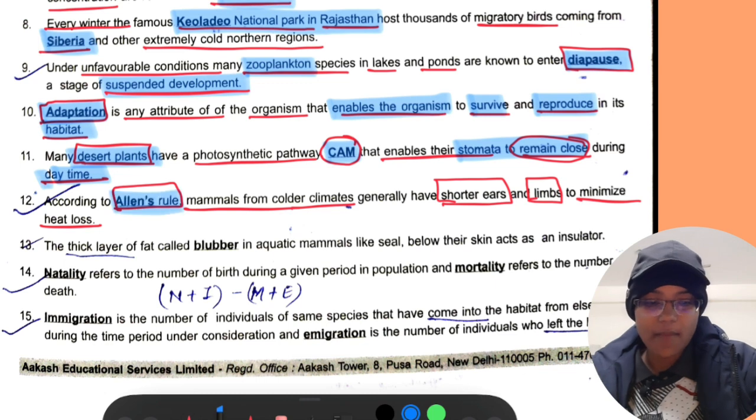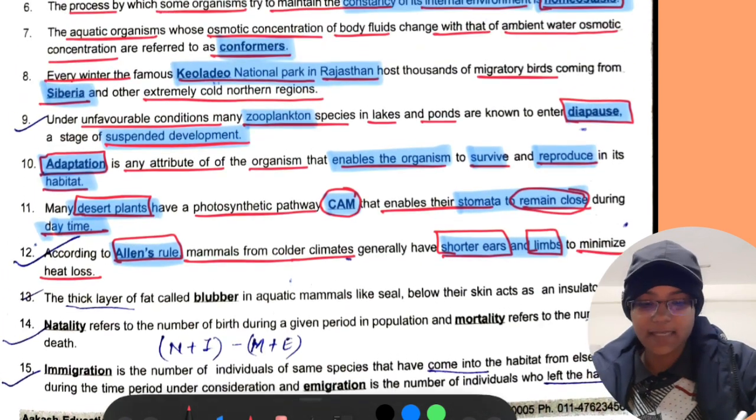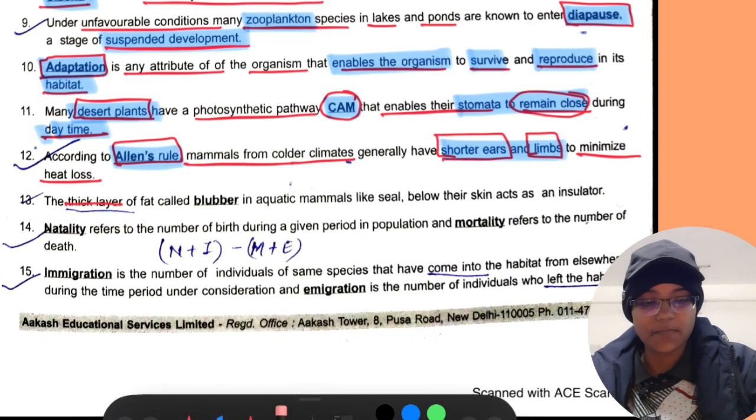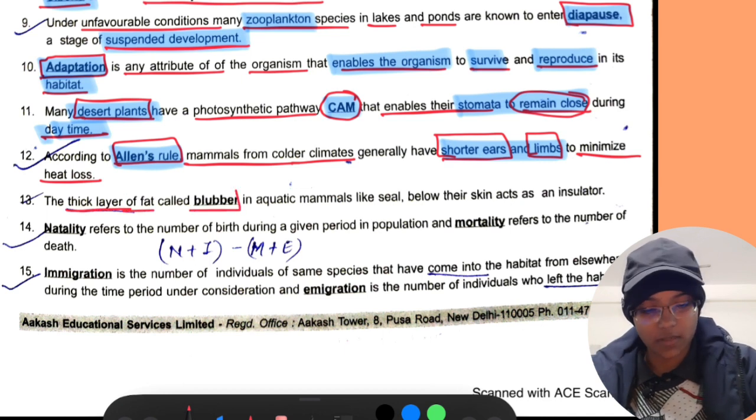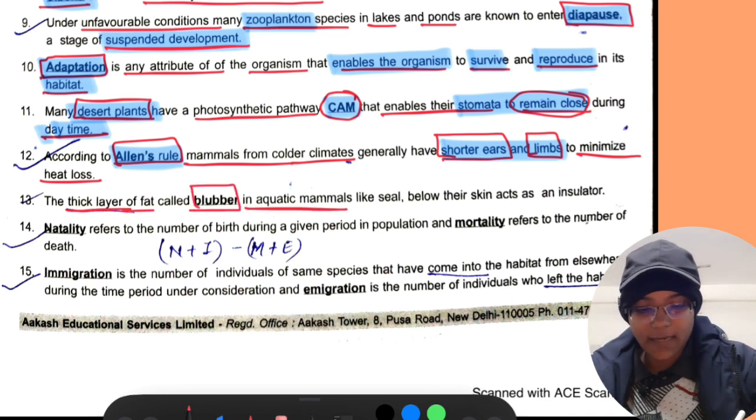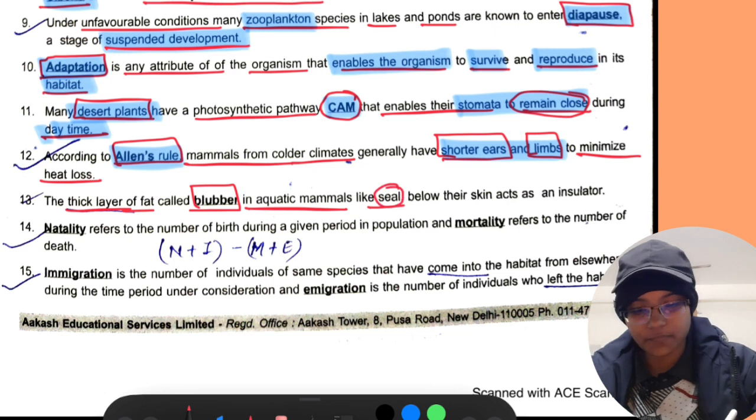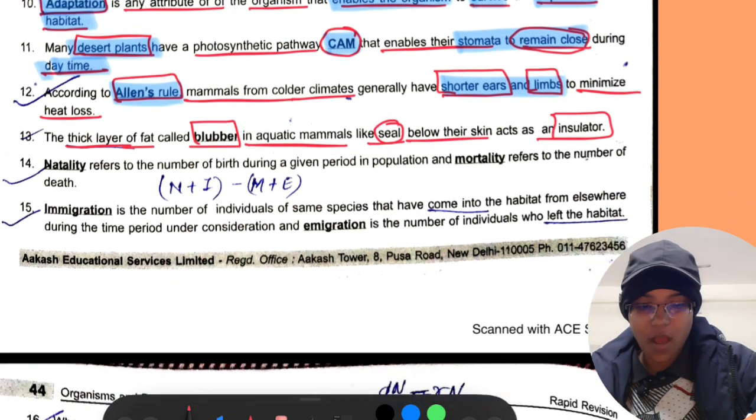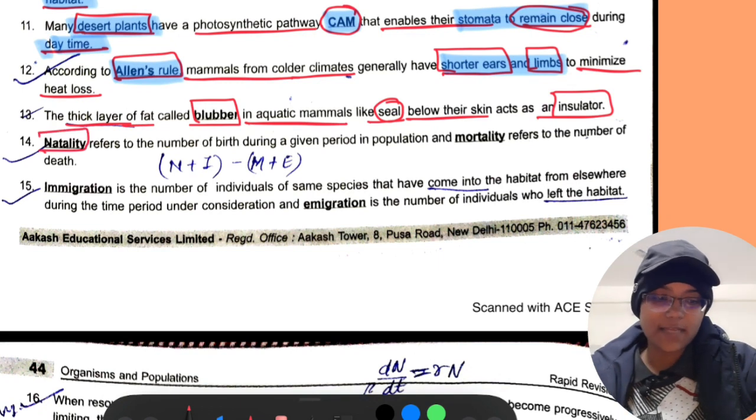According to Allen's rule, animals from colder regions generally have shorter ears and limbs to minimize heat loss. The thick layer of fat called blubber in aquatic animals like seal below their skin acts as an insulator.